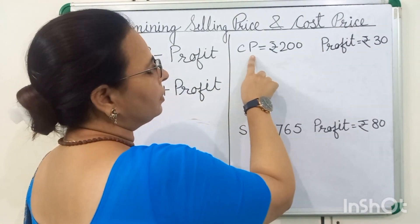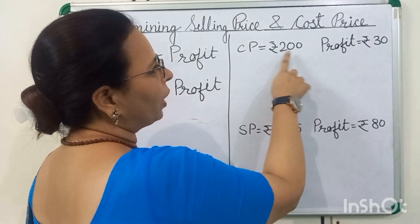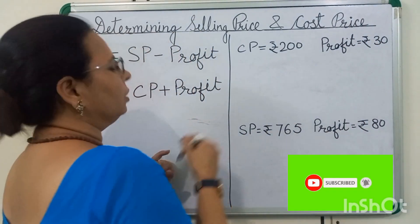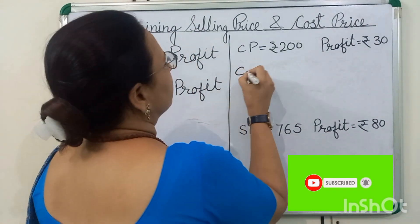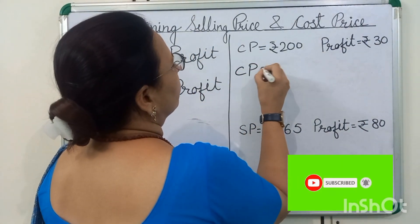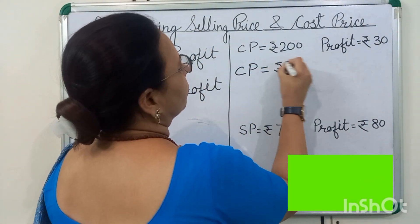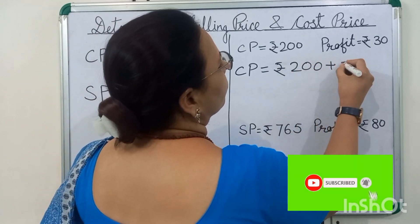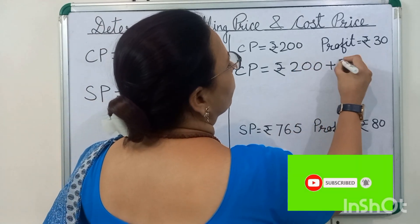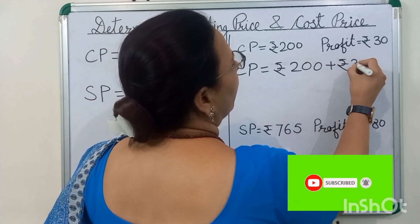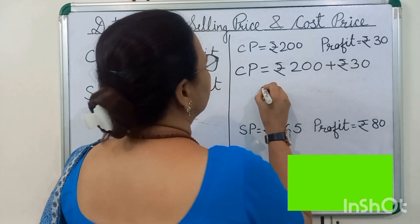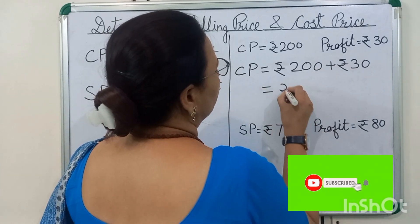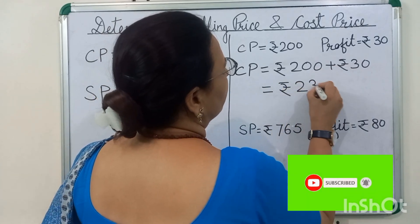Here we will add cost price 200 and profit 30. When we add these numbers, we will get price 230.